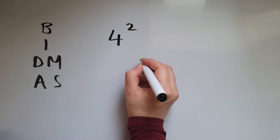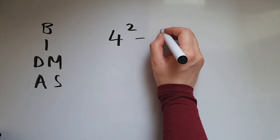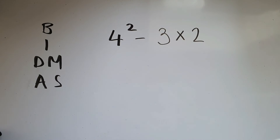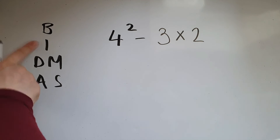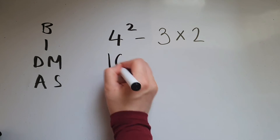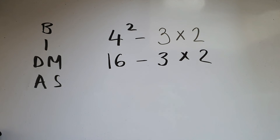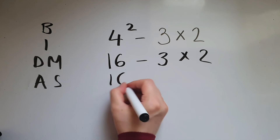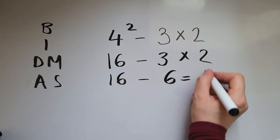If I have 4 squared take away 3 times 2: indices come first, so 4 squared is 16, take away 3 times 2. Then multiplication comes before subtraction, so 16 take away 6, giving us 10.